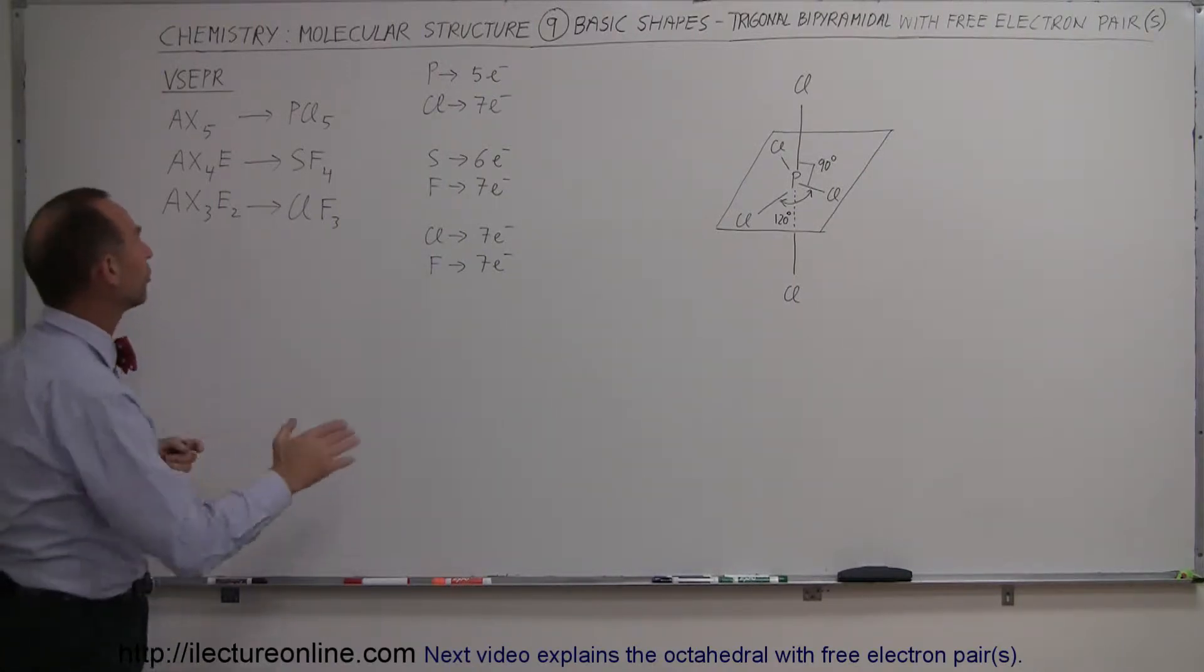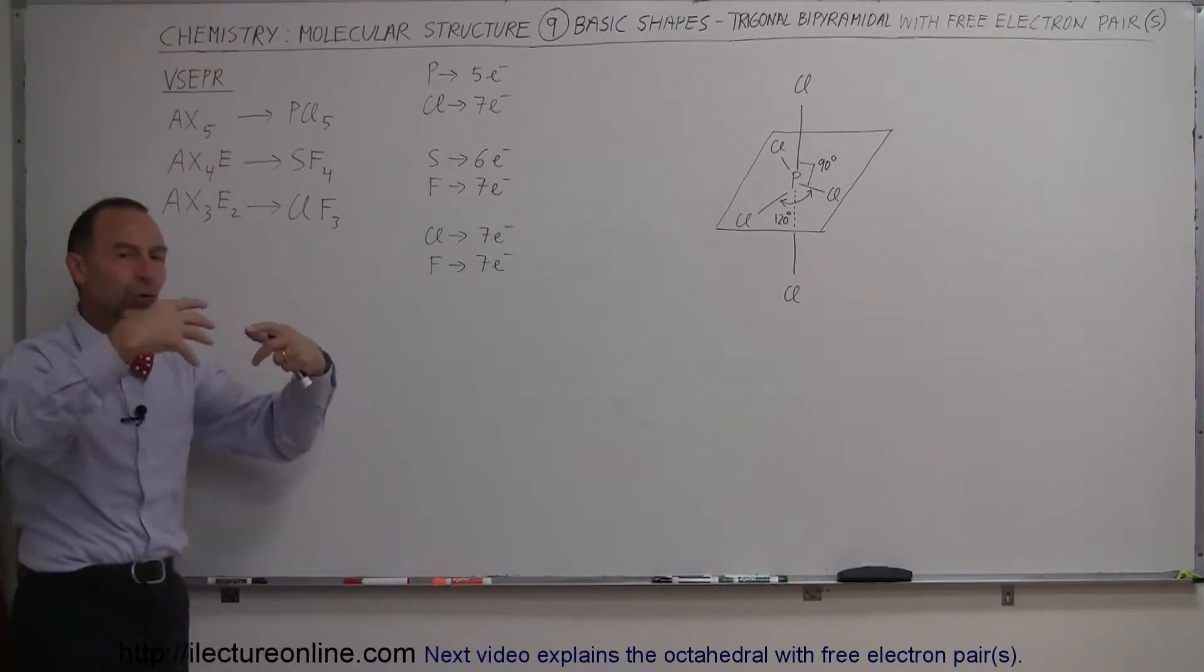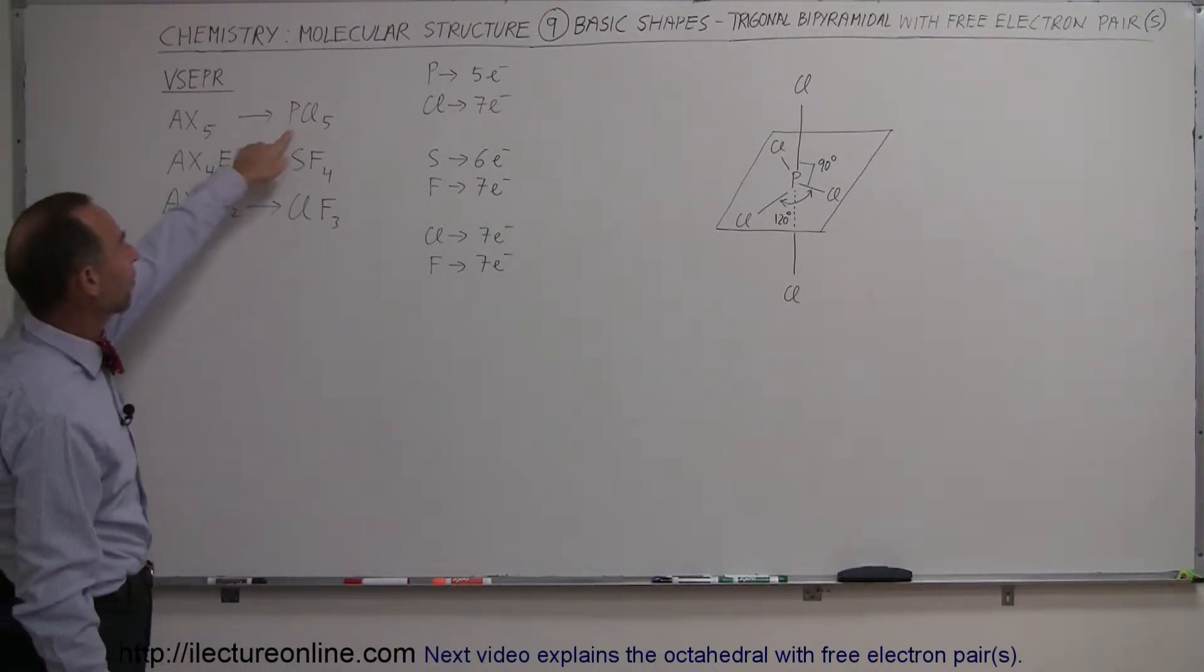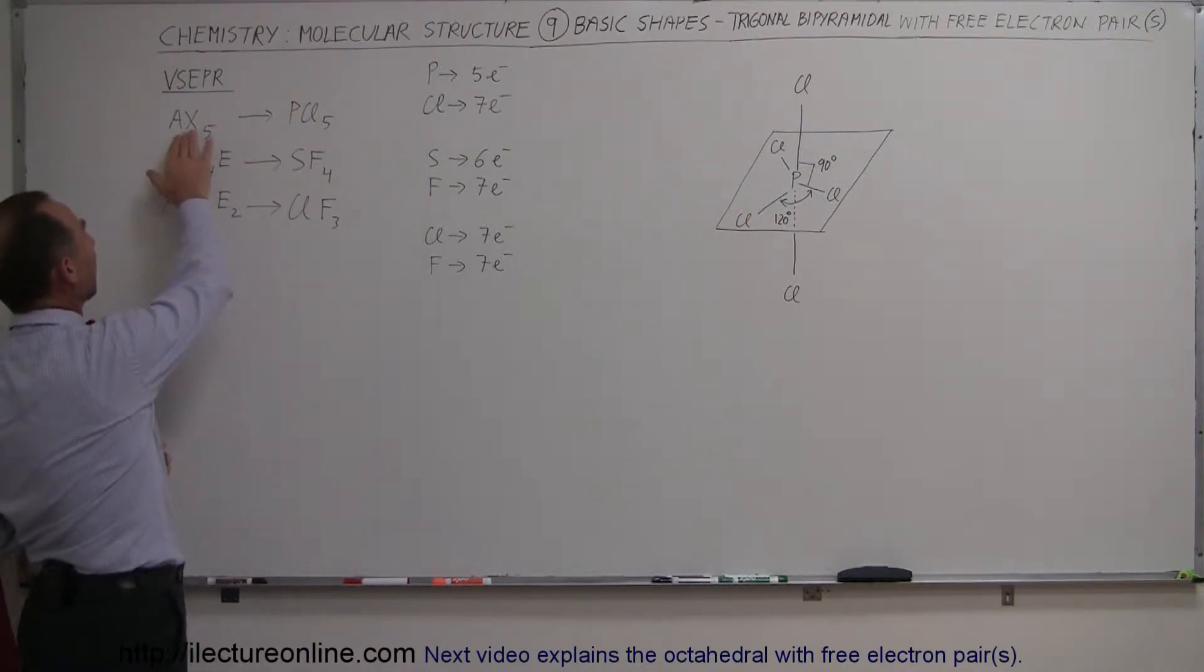And those are formed when we have molecules in this shape with one central atom and five appendages, five terminal atoms making up the whole molecule, making up the shape of the molecule. For example, we have phosphorus pentachloride as one of those molecules. So one central and five appendages.